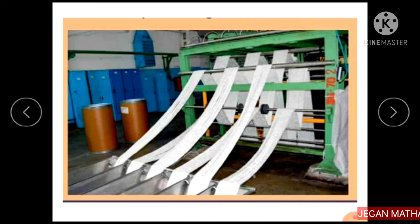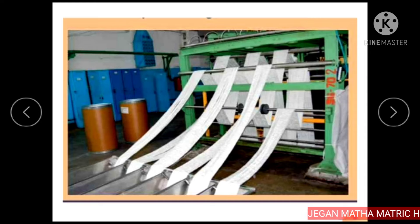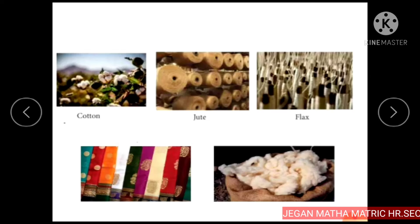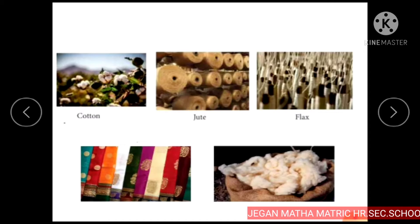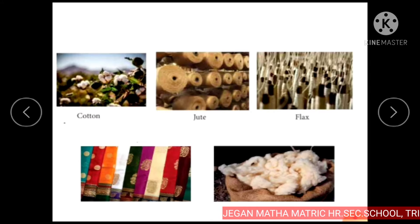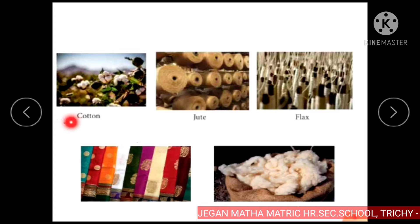Fibers that are made using raw materials from petroleum are synthetic fibers. Examples include polyester, acrylic and nylon. Historically, humans used natural fibers and animal fur for shelter, clothing and protection from the weather. Today a large variety of natural fibers are still grown and processed, such as cotton, silk and wool.